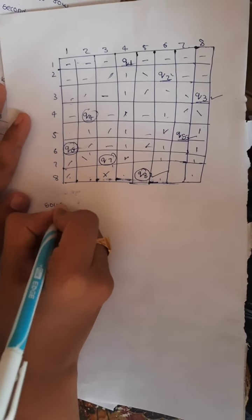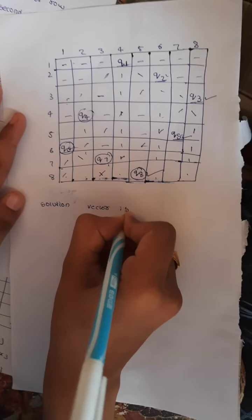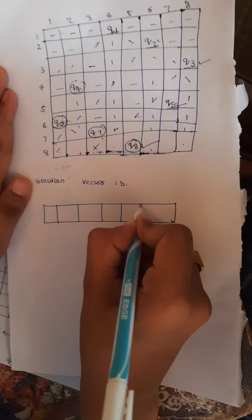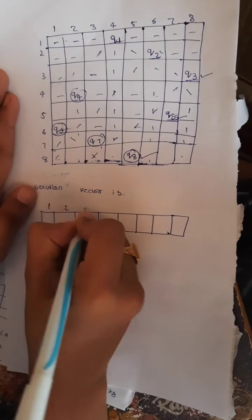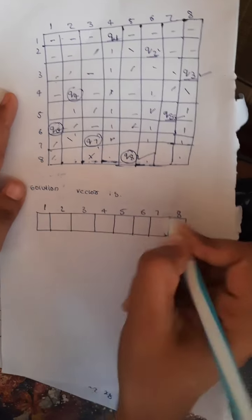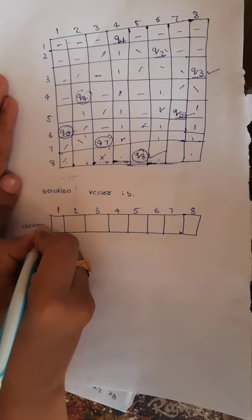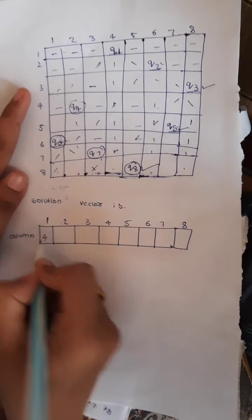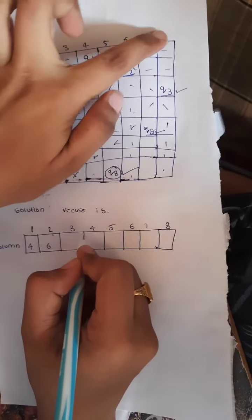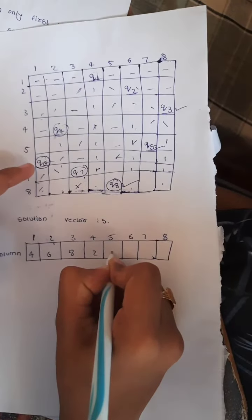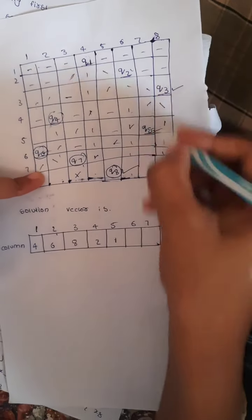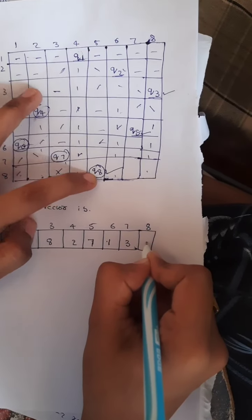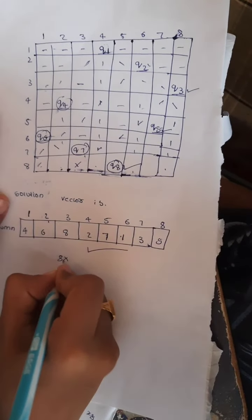Now we are writing the solution vector for these Queens. The solution vector is arranged like an array: 1, 2, 3, 4, 5, 6, 7, 8 for Queen 1 through Queen 8. We write the column numbers in which each Queen is placed — Queen 1 in the 4th column, Queen 2 in the 6th column, Queen 3 in the 8th column, Queen 4 in the 2nd column, Queen 5 in the 7th column, Queen 6 in the 1st column, Queen 7 in the 3rd column, Queen 8 in the 5th column. This is the solution vector for the 8x8 Queens problem.